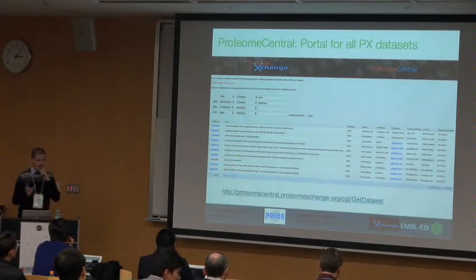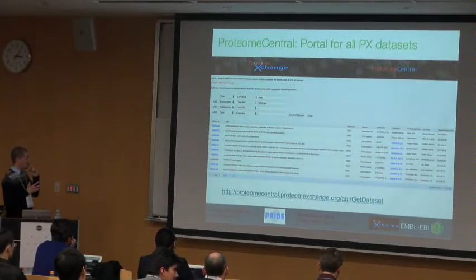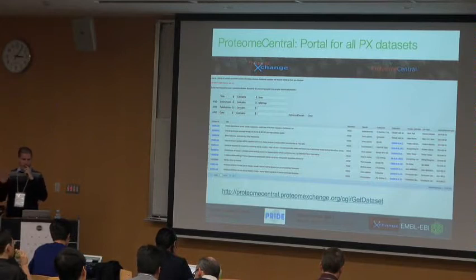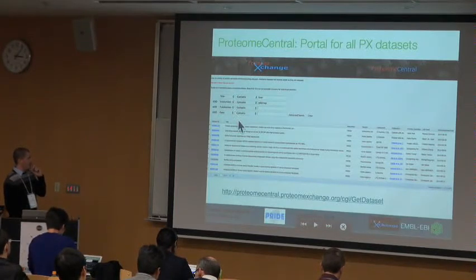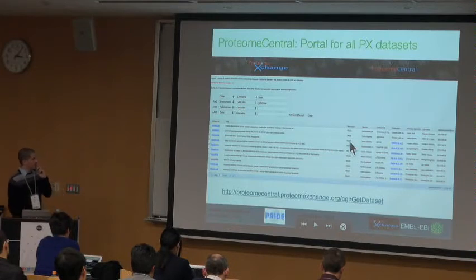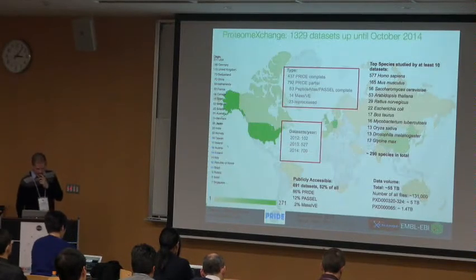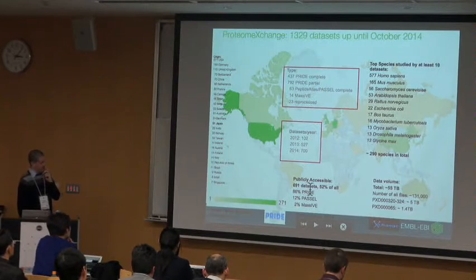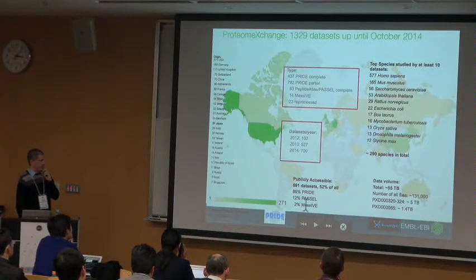After the submission process, ProteomicsExchange knows that a dataset was published by one of their partners. There is a central point called ProteomicsCentral, a web page where all experiments are tracked. It does not matter if it is in PRIDE, MassIVE, or other repositories — there is a column indicating which repository holds it. At the moment more than 80% of submissions are stored in PRIDE, 12% in MassIVE, and about 2% in others that recently joined.